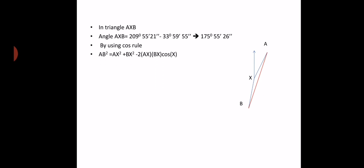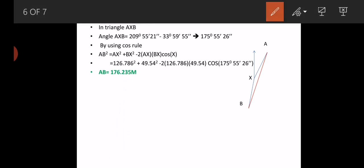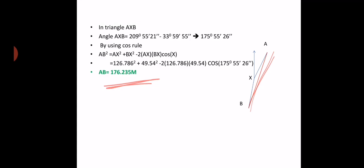Using the cosine rule: AB² = AX² + BX² − 2·AX·BX·cos(AXB). Substituting the values, the horizontal distance AB = 176.235 meters. So we have found both the vertical difference between A and B (27.92 m) and the horizontal distance (176.235 m). Remember, this is a very important type of problem. Thank you.